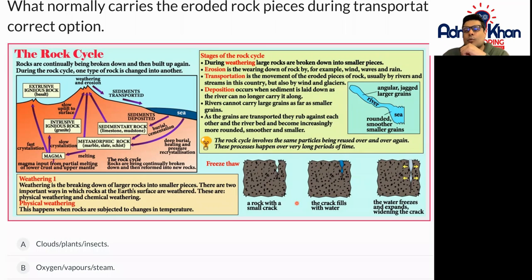You can see a rock here with a small crack in it. This crack fills with water and then the water freezes and expands, widening the crack, which means that the pieces of rock get smaller and smaller over time as they go through the river and are deposited into the sea.